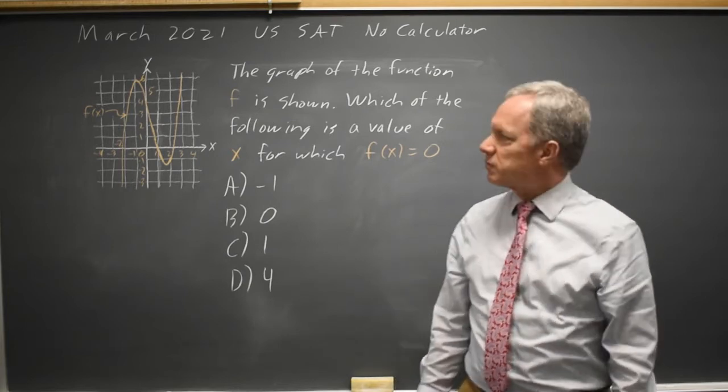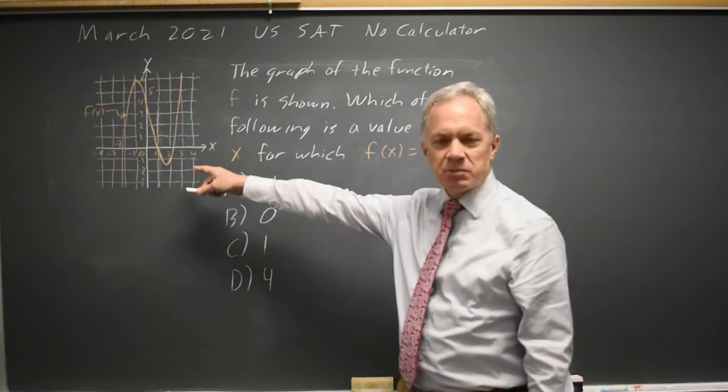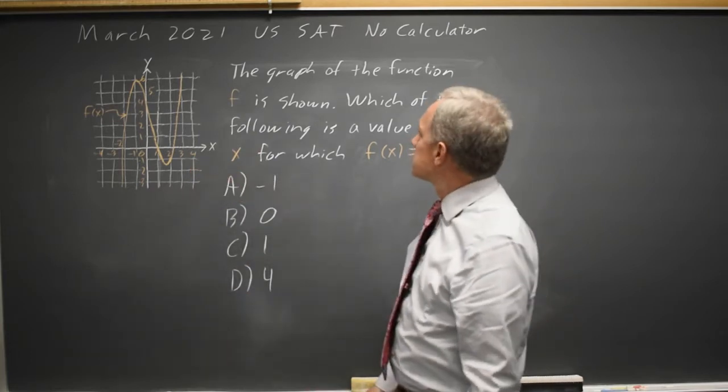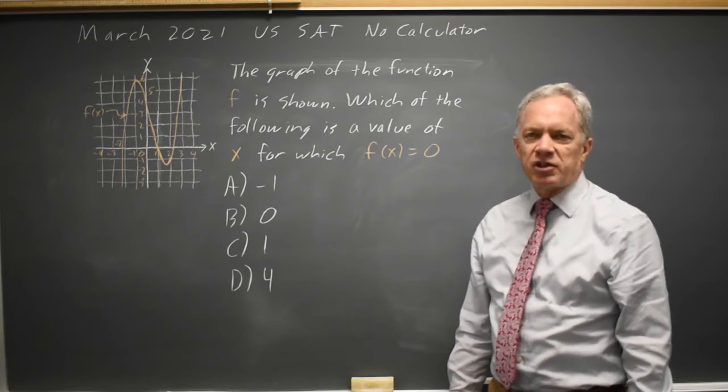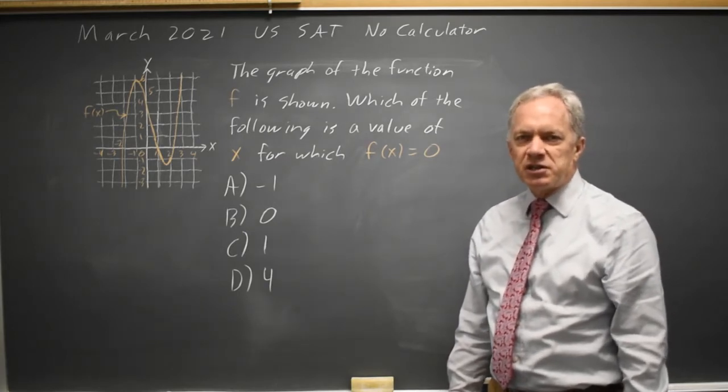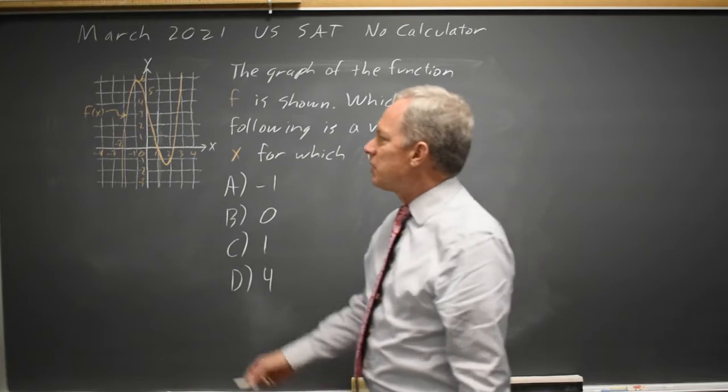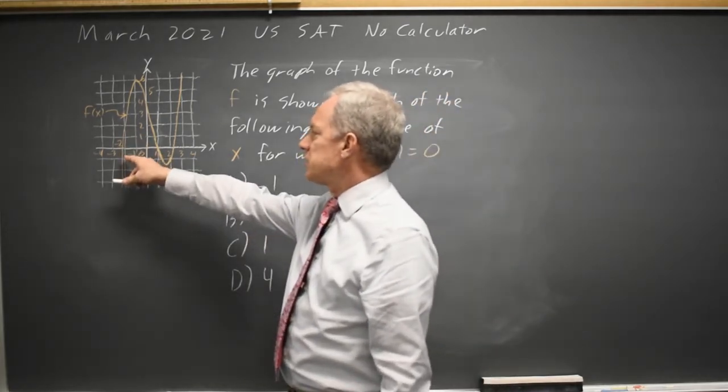The College Board gives us the graph of what appears to be a cubic or something similar and asks which is a value of x for which f of x equals 0. f of x is the y value and the y value equals 0 when we pass through the x-axis.